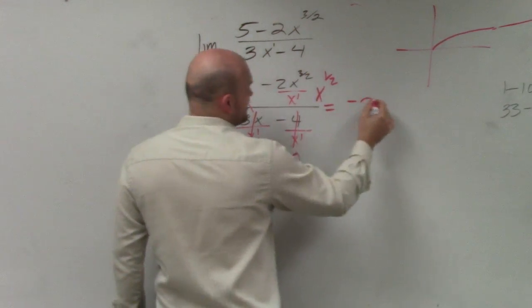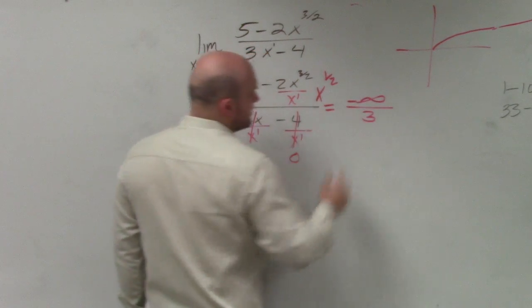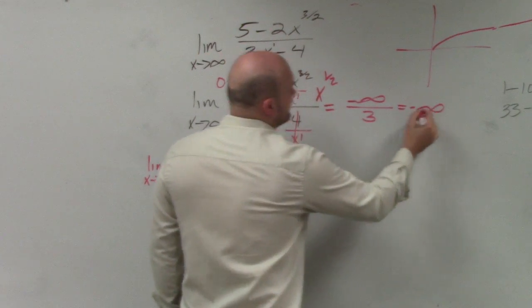So we have minus infinity divided by 3. That's just going to equal negative infinity.